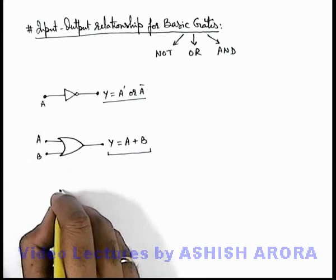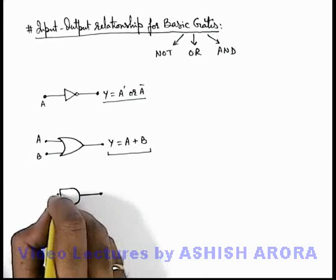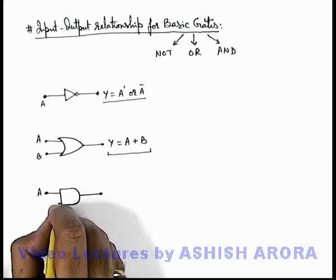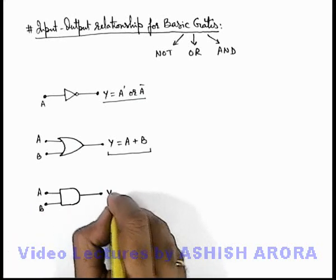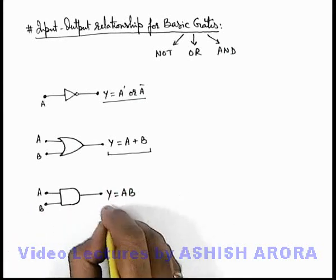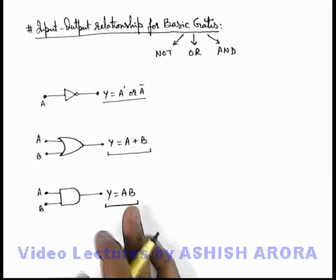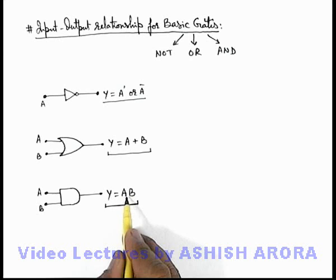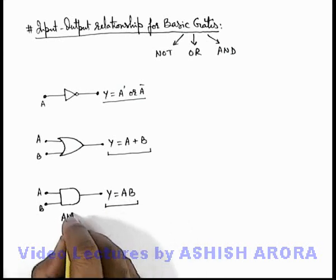If we talk about an AND gate, in case of an AND gate if inputs applied are A and B, in this situation the output Y we can write as A·B. This is the relationship between input and output, this is the way how we write it. If A and B are written in multiplied form, this represents that this is the output of an AND gate.